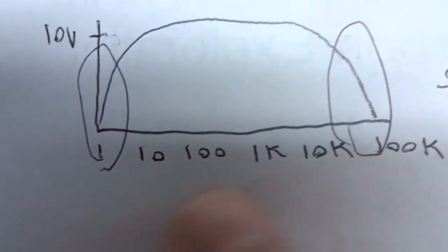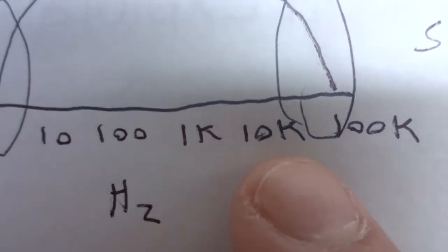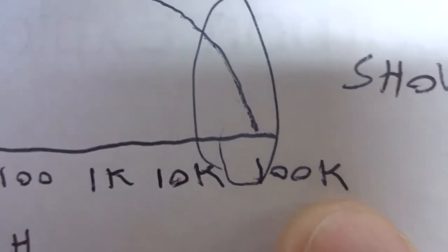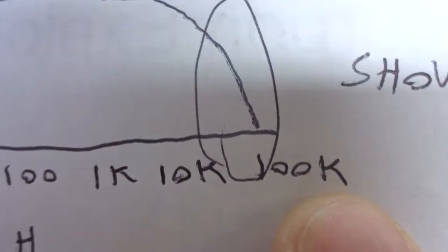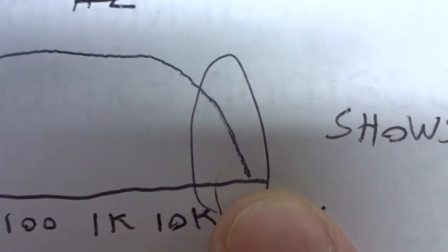We have our 10 volt source. It ramps up and down on a horizontal axis measured in hertz. 1, 10, 100, 1k hertz, 10k hertz, 100 hertz, kilohertz, kilohertz, kilohertz. Notice that 100 kilohertz is the detail that you can see in the demolition of this graph.